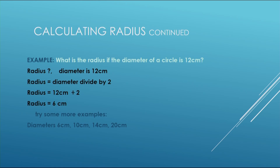Example: what is the radius if the diameter of a circle is twelve centimeters? What is half of twelve? Radius you don't know, diameter we know — it is twelve. So you say radius equals diameter divided by two, which is twelve divided by two. Twelve divided by two is six. So the radius of a circle where the diameter is twelve is six centimeters.